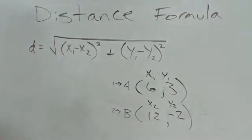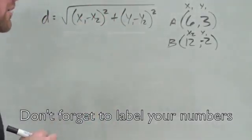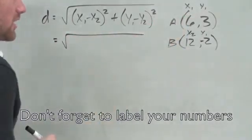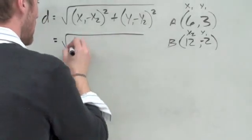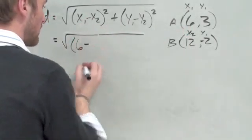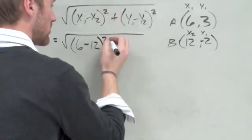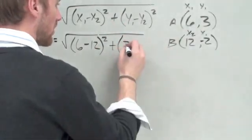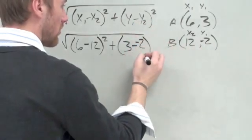I'm going to erase this and fix it up. We had to readjust things to show you more clearly how it works. First thing we do is we labeled our stuff already. Now we're taking this and putting our numbers in. Starting with x₁, which is 6, minus x₂ which is 12, squared. Plus, y₁ is 3 minus y₂ which is -2, squared.